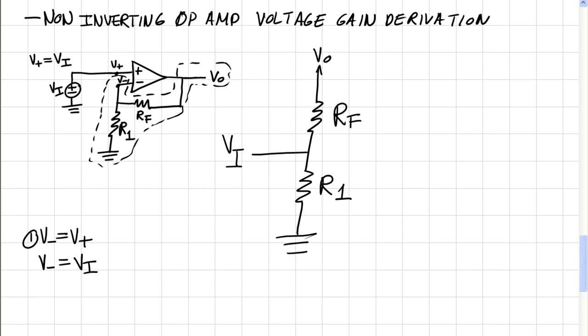And we can use the voltage divider formula because we can call this our V source. And so we can say that V i is equal to V out times R1, since that is where we are measuring the voltage, over RF plus R1.